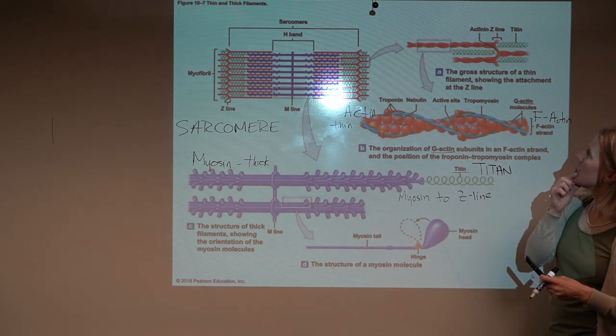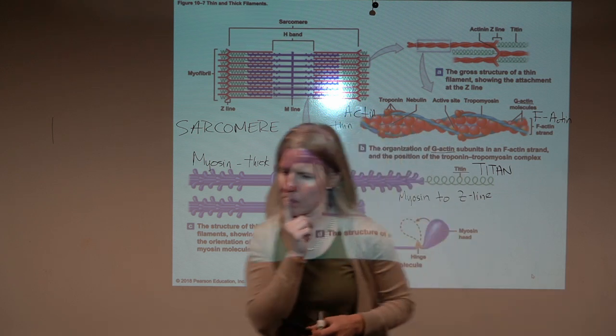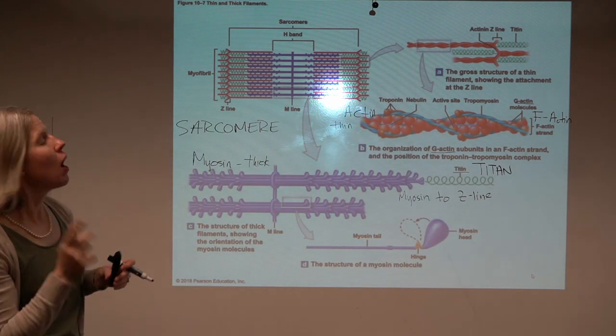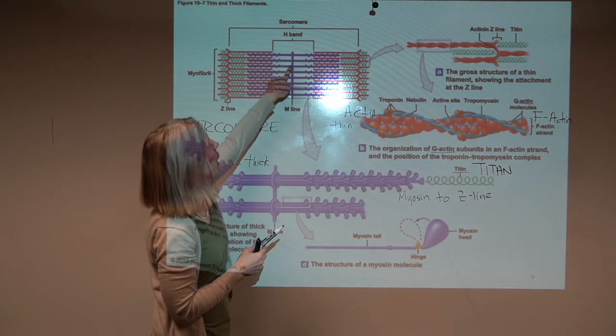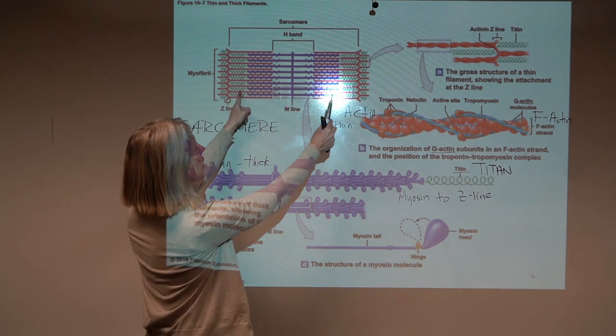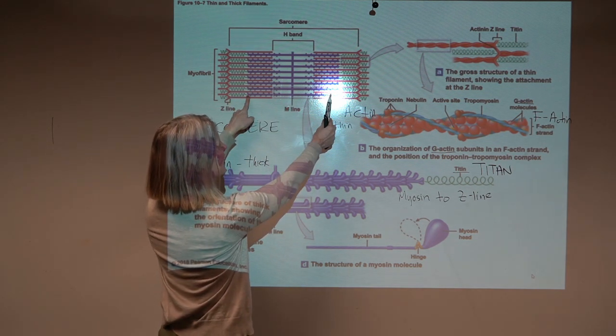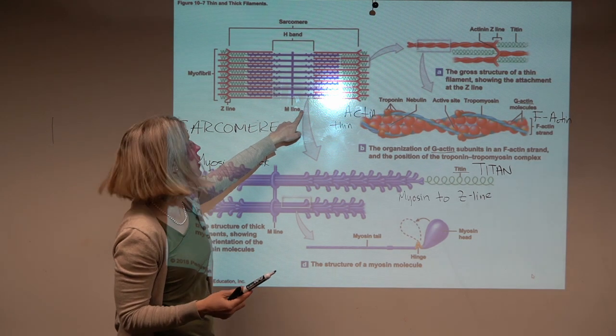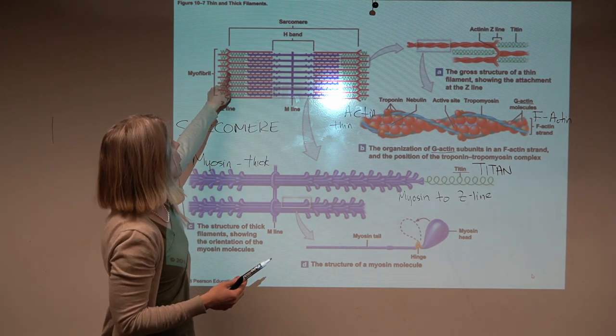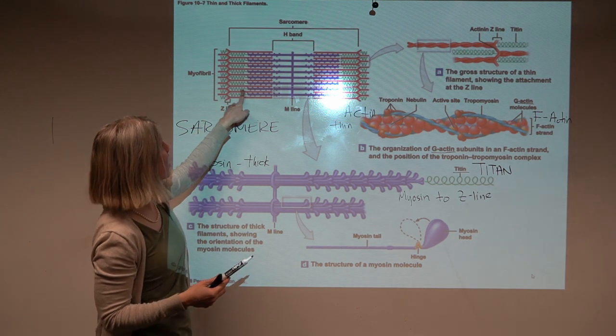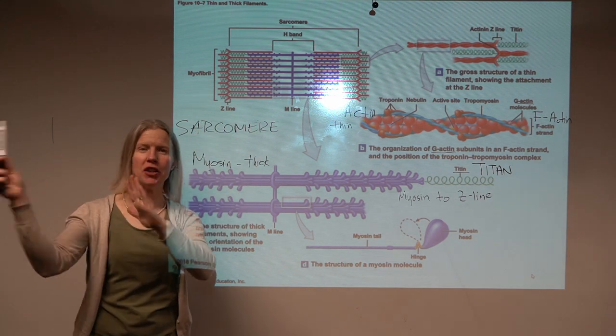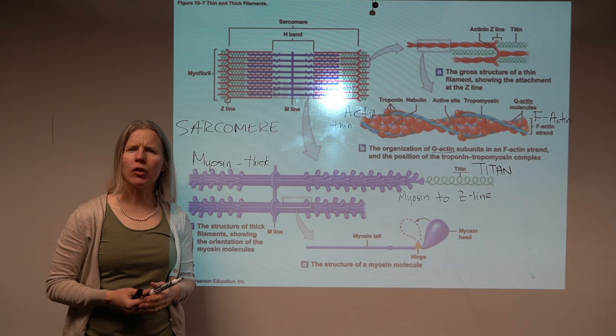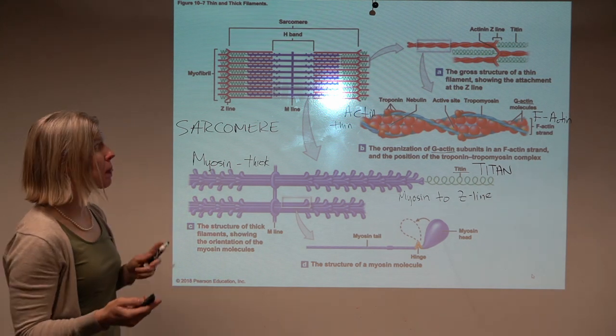Then this M-line. So at the center of the myosin, it's kind of anchored together by a protein, and we end up referring to that as the M-line. The Z-line as well, which is holding all of the actin from adjacent sarcomeres together, would also be considered a stabilizing protein.